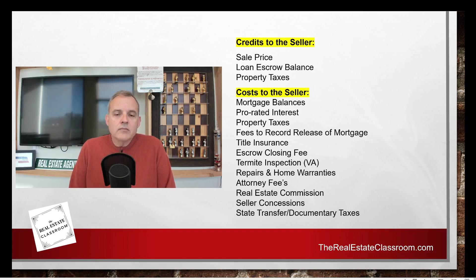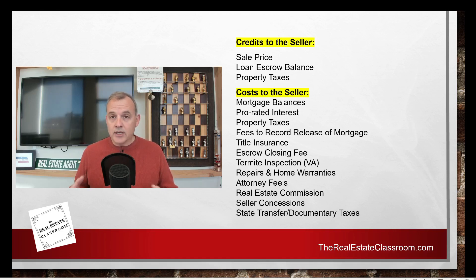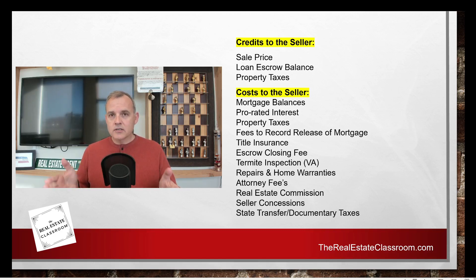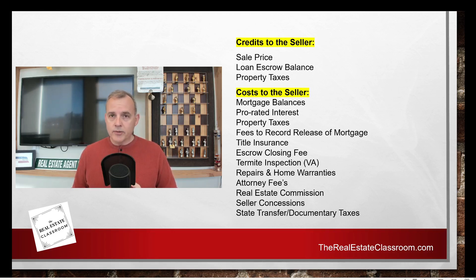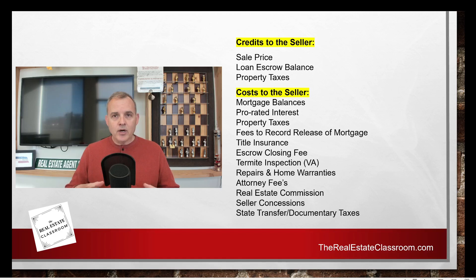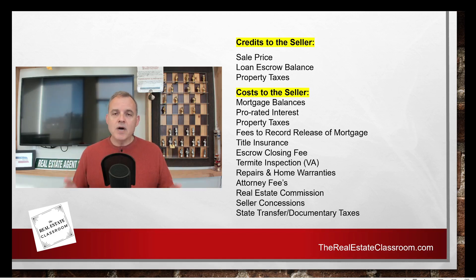Credits to the seller are things like the sale price or the loan escrow balance. The loan escrow account is that separate account that the lender sets up on your behalf so there's money available to pay property taxes and insurance every year. Your monthly mortgage payments are made up of four parts: principal, interest — that's the money to pay back the loan to the bank — and then taxes and insurance. The taxes and insurance part of the payment goes to that loan escrow account each month and builds up, so when it's time to pay property taxes and insurance premiums, the money is there.